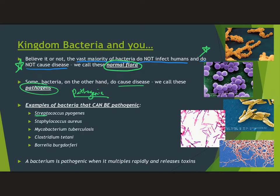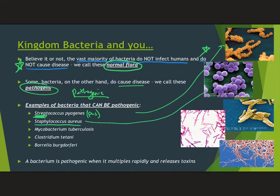Streptococcus pyogenes — most of you have probably had this before. Streptococcus is actually a reference to its shape, and pyogenes is a reference to pus. This is what typically causes strep throat. The second one, another thing most of you have probably had before, is Staphylococcus aureus. This causes a staph infection. A lot of times people have heard of staph infections as a really bad thing, and it can be — there are also antibiotic-resistant staph strains not killed by most medicines.